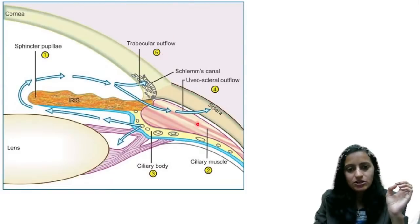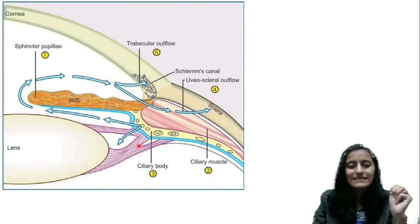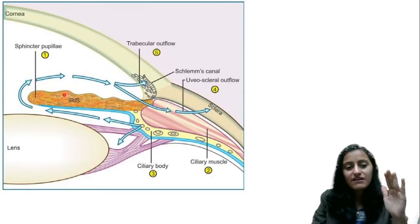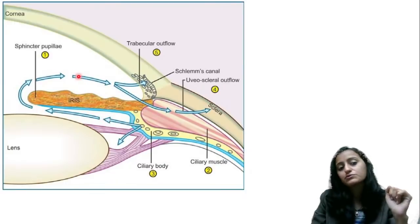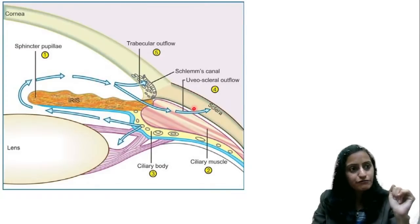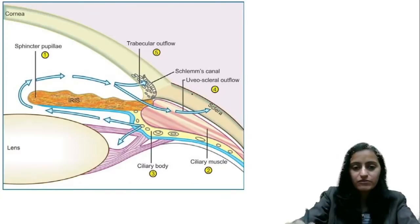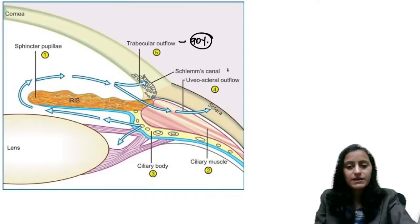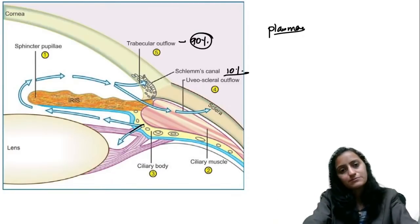Look at this image. Here is the ciliary muscle and ciliary body, where aqueous is produced. The anterior segment has the posterior chamber behind the iris and the anterior chamber in front. Aqueous humor flows from the posterior chamber to the anterior chamber and then drains out via the trabecular outflow and the uveoscleral outflow. Remember these points — they form the basics of understanding glaucoma drugs.